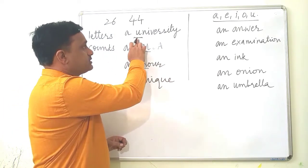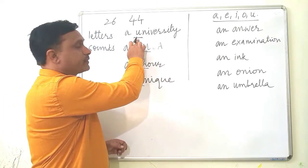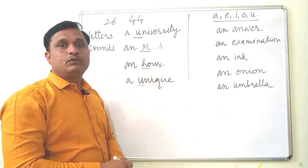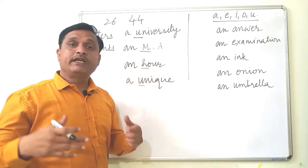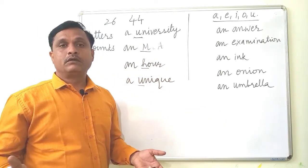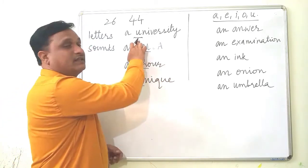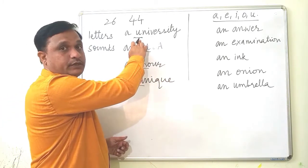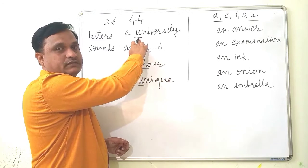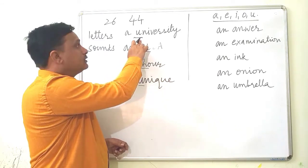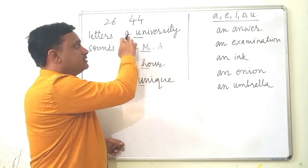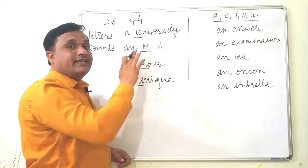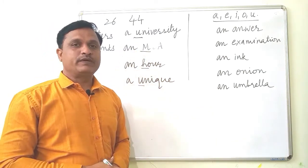Now if we look at the sound of U as in 'university' — when you say it, it becomes a consonant-like sound. It's not a vowel sound, although the letter U is a vowel letter. But the sound is not a vowel sound, and that is the reason why we have used A — 'a university' — and we cannot use AN.